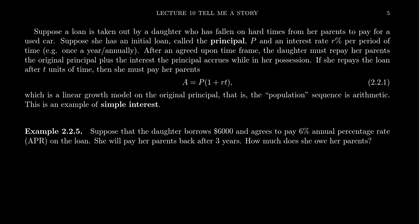After an agreed upon timeframe, the daughter must repay her parents the original principal plus interest on the principal that occurs while she's in possession of the loan. If she repays the loan back after T units of time, the amount equals P times one plus Rt. With this simple interest loan, there's not any reoccurring payment. It's just gonna be a lump sum.